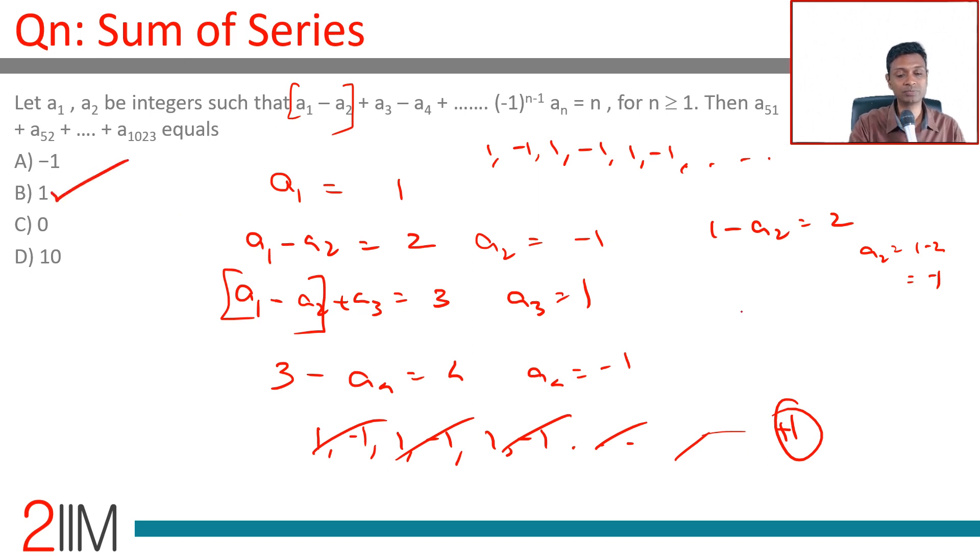a51 to a1023, there are an odd number of terms, so there is one more odd term than even term. Each odd term will cancel with each even term. The extra odd term is going to be 1, so the total is 1.